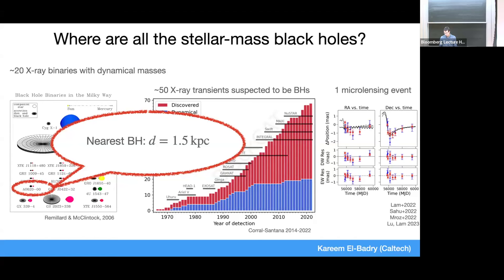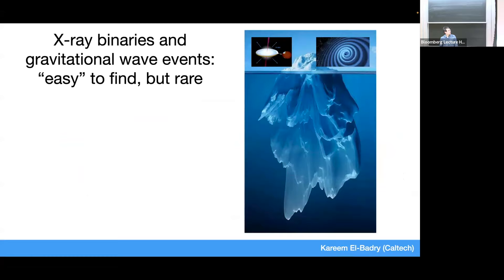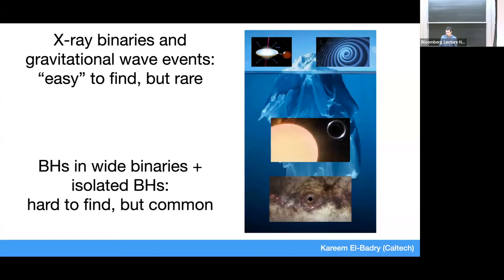One way to think about this is like an iceberg. The black holes we can study easily now are the X-ray bright ones and those merging through gravitational waves — bright in electromagnetic light or gravitational waves, but probably a rare outcome of binary evolution. For example, to find a gravitational wave merger in the Milky Way, you'd have to wait something like 10^7 to 10^8 years. Underneath, we think there's a much larger population of black holes in binaries that are more widely separated with no mass transfer, or even more commonly, isolated black holes not orbiting anything.